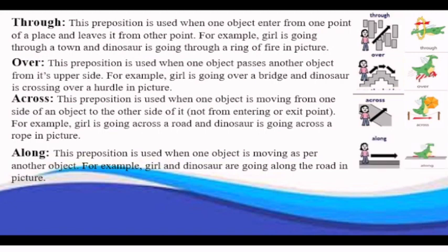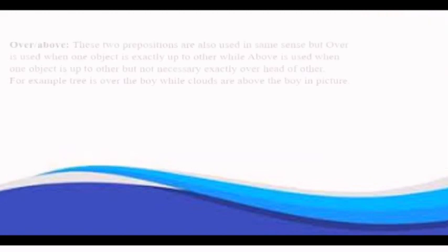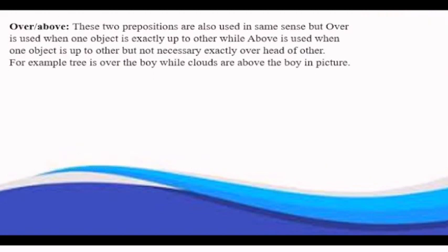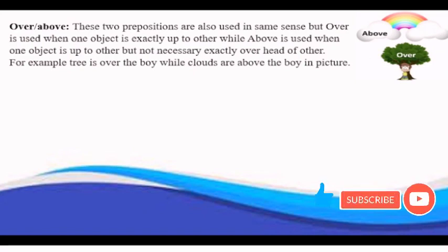Over and above: these two prepositions are also used in same sense, but over is used when one object is exactly upon other object, while above is used when one object is upper to another but not necessary exactly overhead of other. For example, tree is over the boy, while clouds are above the boy, in picture.